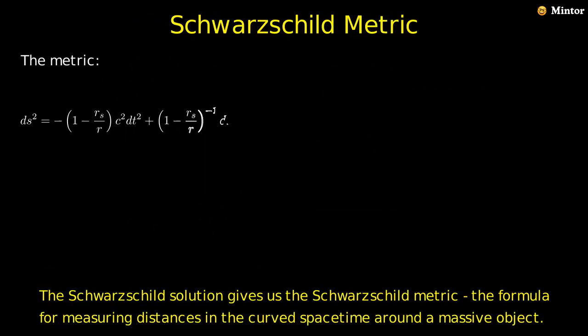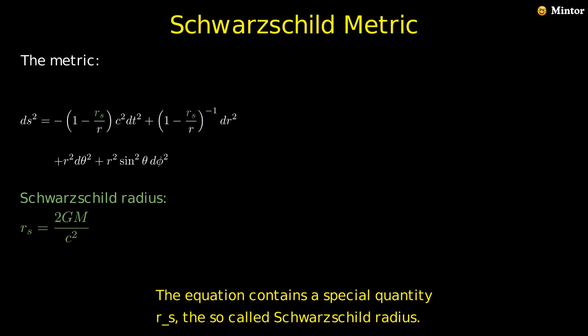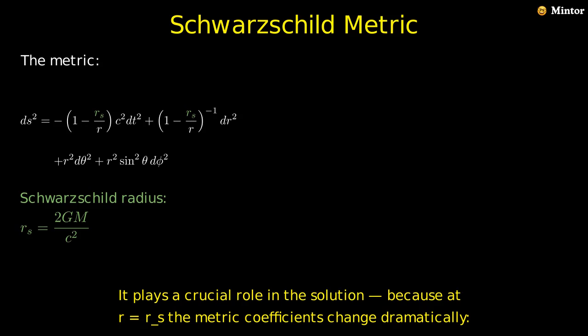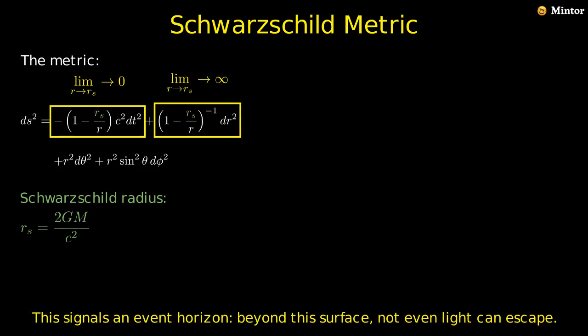The Schwarzschild solution gives us the Schwarzschild metric, the formula for measuring distances in the curved spacetime around a massive object. This metric tells us how to measure spacetime intervals. Notice how it depends on the distance r from the center of the mass. The equation contains a special quantity r_s, the so-called Schwarzschild radius. It plays a crucial role in the solution, because at r equals r_s, the metric coefficients change dramatically. The time part goes to zero and the radial part blows up. This signals an event horizon.